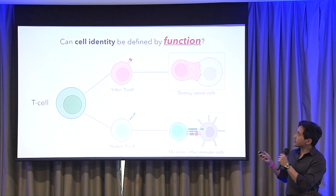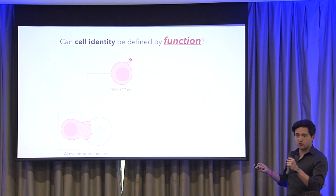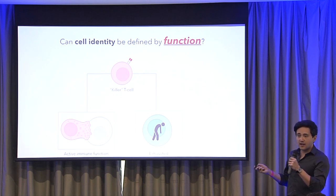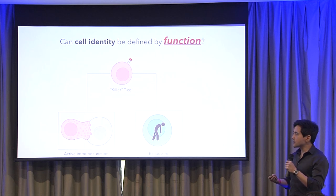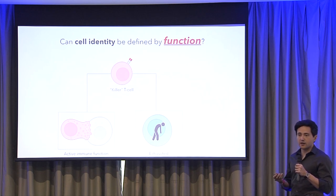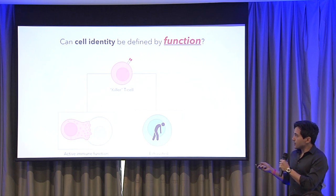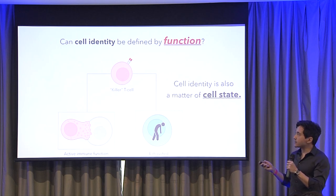So can cell identity be described as function? Not necessarily. Take this killer T cell — we have its active immune function where it'll interact with other cells and destroy them if they become problematic. But we can also have another form of this killer T cell: the exhausted cell. This is a very distinct and stable state that the cell can take. It often happens in cancer, where the tumor is trying to avoid being killed by your T cells. They will secrete things into the microenvironment that tell T cells to stop doing what they're doing, or the T cells can't reach the tumor and they become exhausted — it's like running on a treadmill and never reaching your destination. Cell identity can also be considered a matter of state.